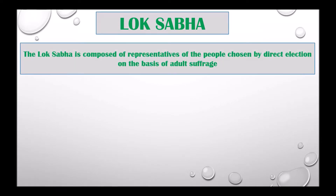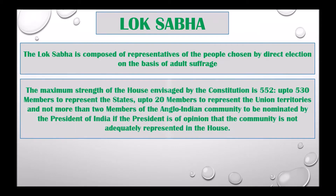Lok Sabha is composed of representatives of the people chosen by direct election on the basis of adult suffrage. The maximum strength of the house envisaged by the Constitution is 552: up to 530 members to represent the states, up to 20 members to represent the union territories, and not more than two members of the Anglo-Indian community to be nominated by the President of India if the President is of the opinion that the community is not adequately represented in the house.